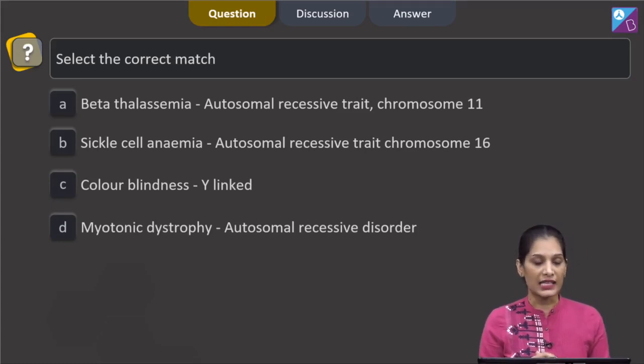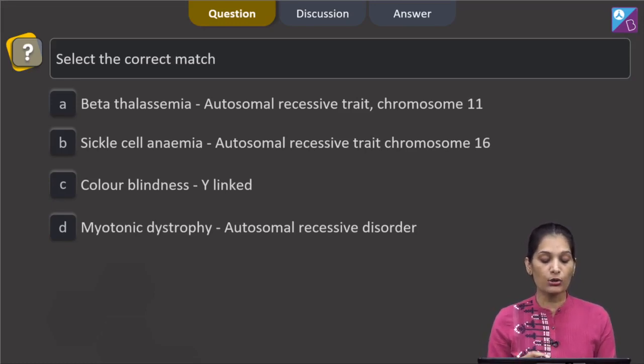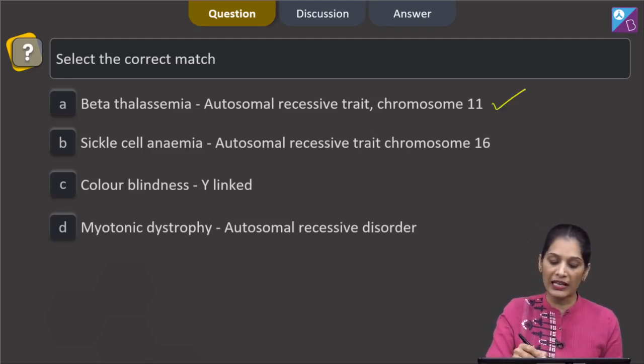This question says select the correct match. A: beta thalassemia, autosomal recessive trait, chromosome number 11. It is true. Beta thalassemia is the autosomal recessive disorder and the gene for it is placed on chromosome number 11.